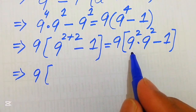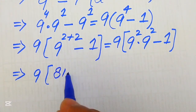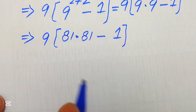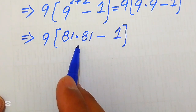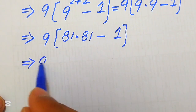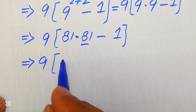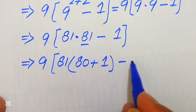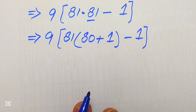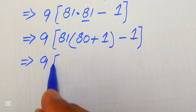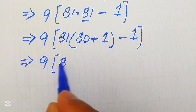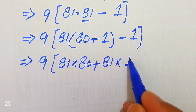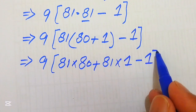We know that 9 squared equals 81, and the other 9 squared is also equal to 81, subtracted by 1. So we need to multiply 81 by 81, and the resulting answer is subtracted by 1. We write the first 81 as it is, and break the second 81 as 80 plus 1, then subtract 1 at the end.